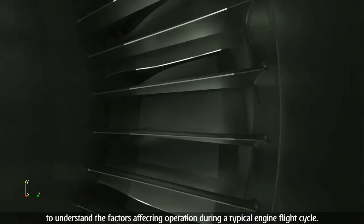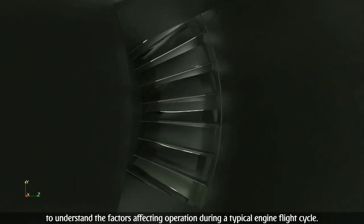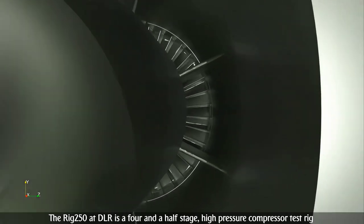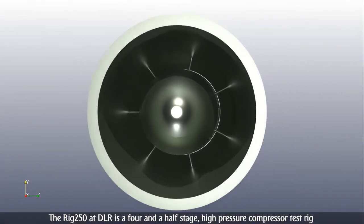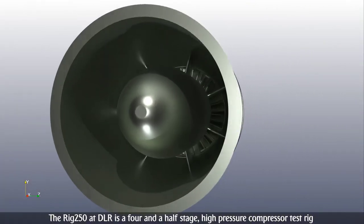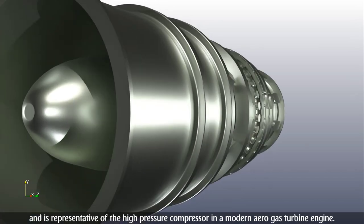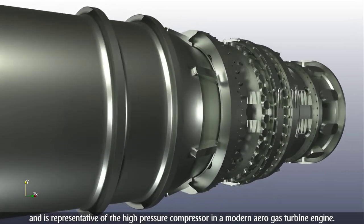To understand the factors affecting operation during a typical engine flight cycle, the RIG 250 at DLR is a four-and-a-half stage high-pressure compressor test rig and is representative of the high-pressure compressor in a modern aero gas turbine engine.